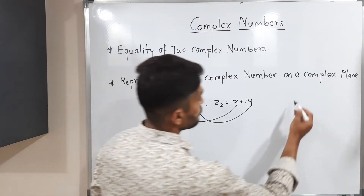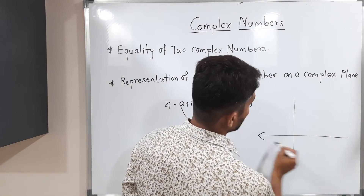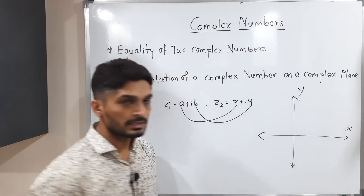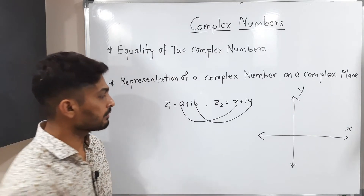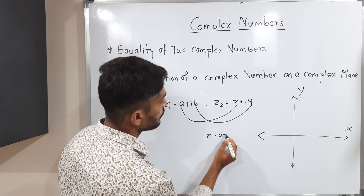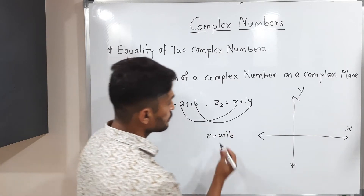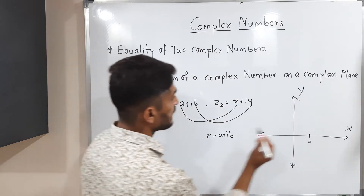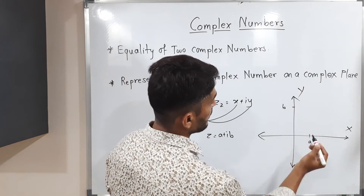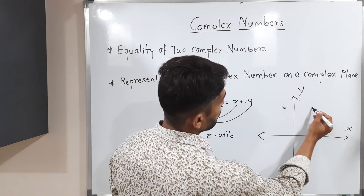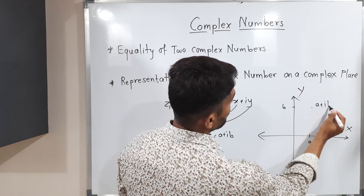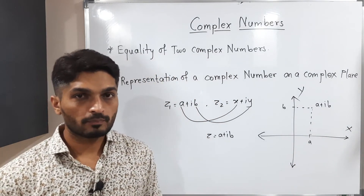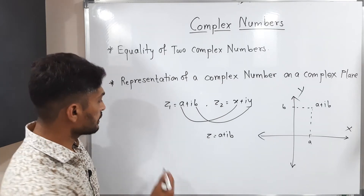Let us look at the representation of a complex number on a complex plane. The x-axis is called the real axis and the y-axis is called the imaginary axis. If you have any complex number z equal to a plus ib, then a is the real part plotted on the real axis and b is the imaginary part plotted on the imaginary axis. In this way we plot a point on the complex plane.